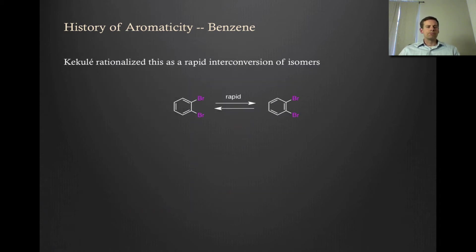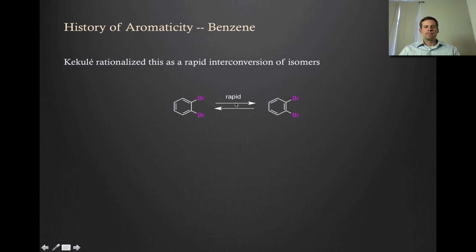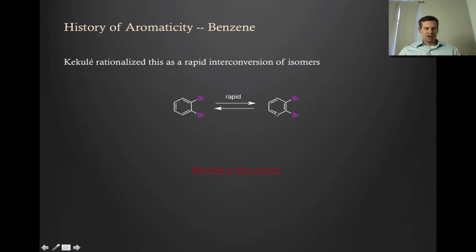Kekulé tried to get around this lack of a fourth isomer by proposing that these positional isomers rapidly interconvert — the idea being that the alkenes are just bouncing back and forth. That's not so unreasonable, but it is actually not correct. I put this in red and underlined because it is extremely important for you to grasp this. Insofar as you continue to view benzene as the rapid interconversion of these isomers, you do not understand aromaticity. It is not the interconversion of cyclohexatrienes — it is something completely different.